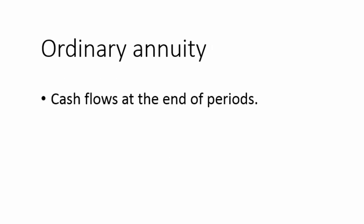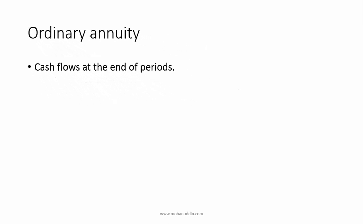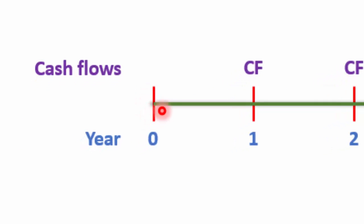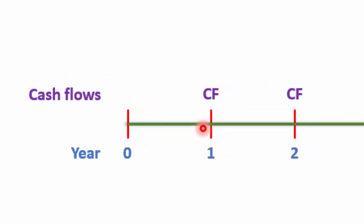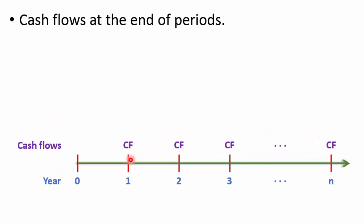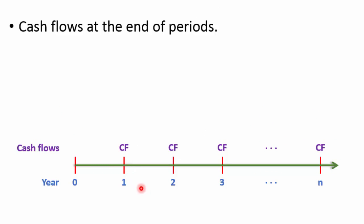An ordinary annuity generates cash flows at the end of periods. If we look at the cash flow timeline, point 0 is actually the beginning of year 1 and point 1 is the end of year 1. Similarly, point 2 is the end of year 2, and the beginning of year 2 is at point 1. In case of ordinary annuity, the cash flows will be generated at the end of each year.